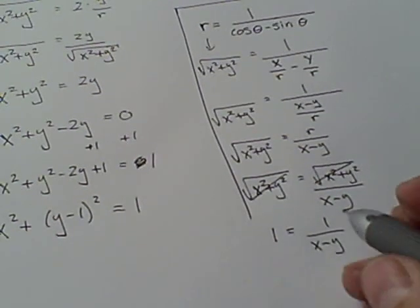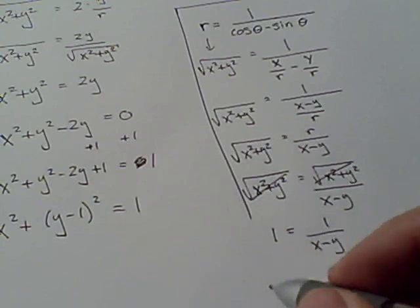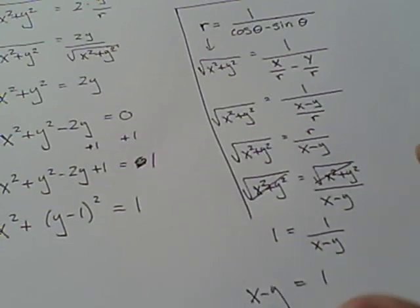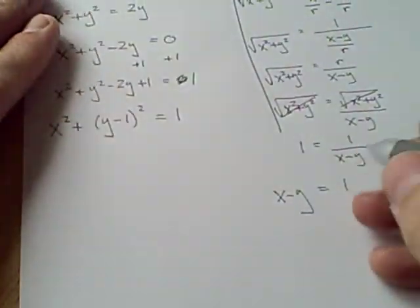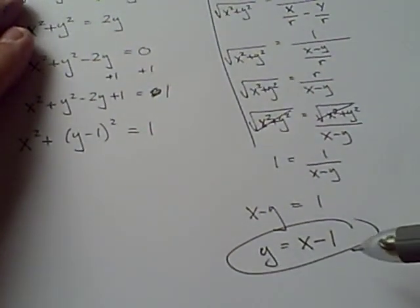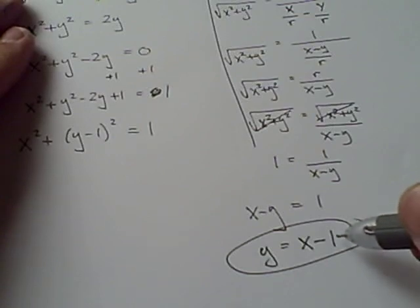Now, let's keep on going. This simplifies quite a bit. Let's multiply both sides by x minus y. That equals 1. And then solve. And we'll have y equals x minus 1. That's a really simple equation. That's just a line, slope 1, y-intercept at minus 1.